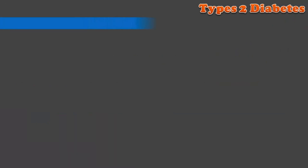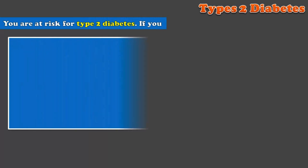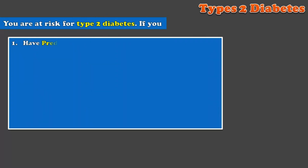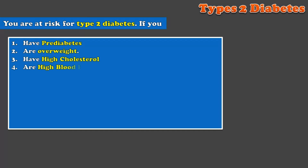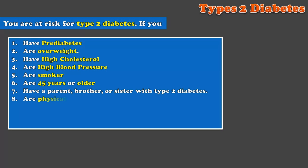Now we will mention the dangers of type 2 diabetes. There are some signs that if you ignore them, you may be at risk of developing type 2 diabetes — such as prediabetes symptoms, weight gain, high cholesterol, high blood pressure, smoking, being over 45 years of age, family history of diabetes, and physical activity less than 3 days a week.